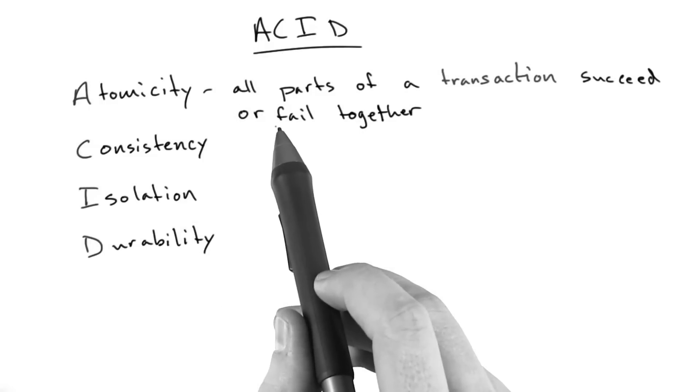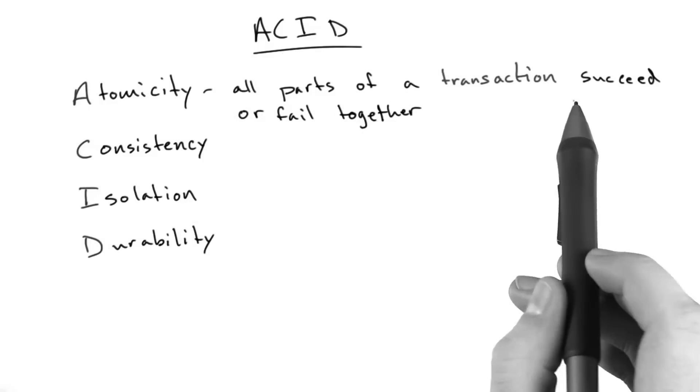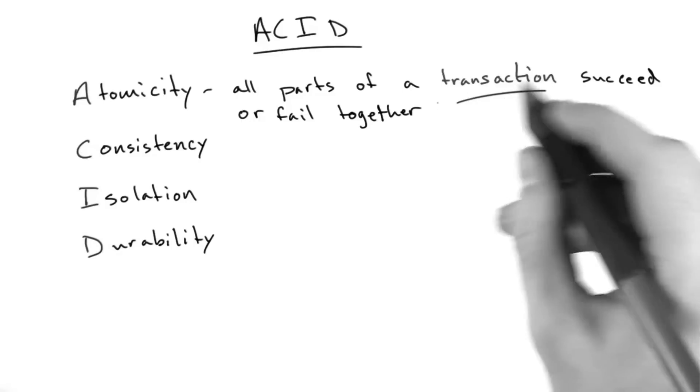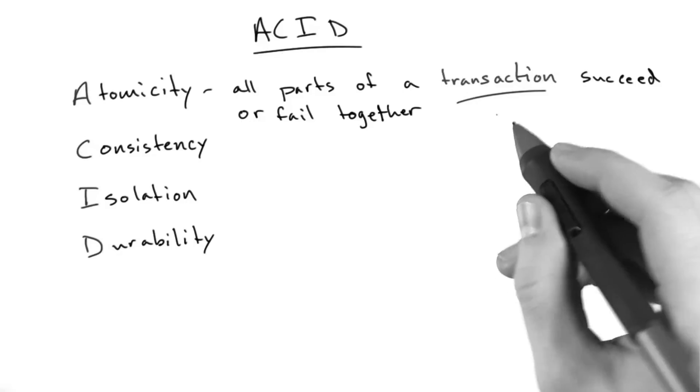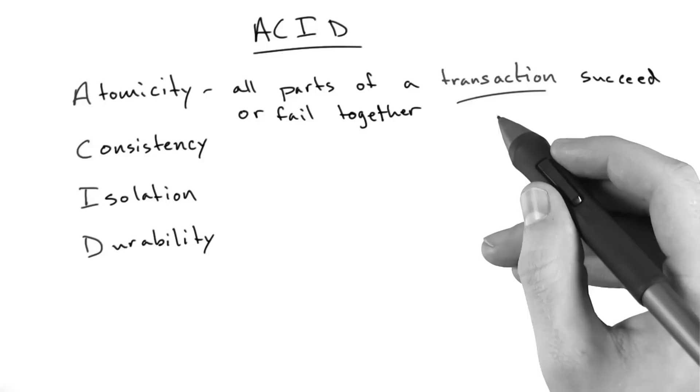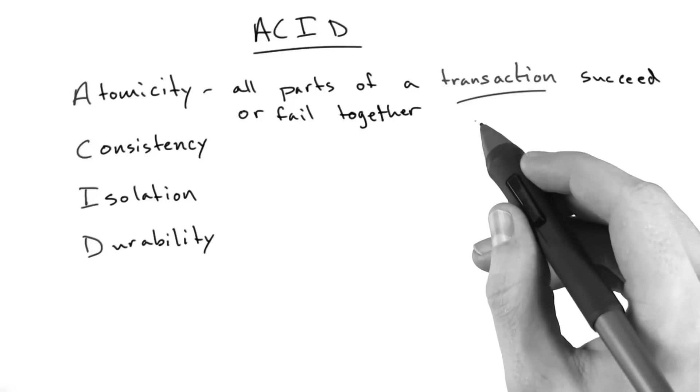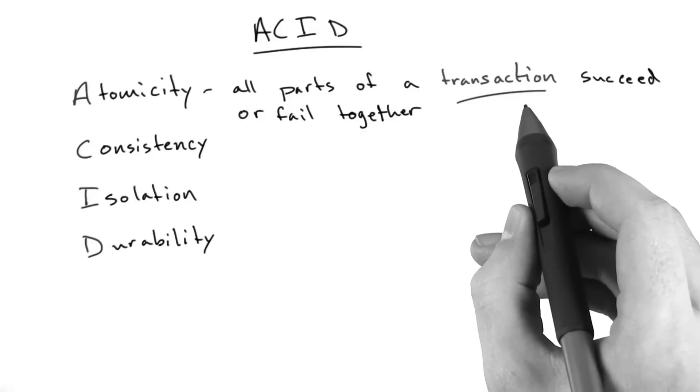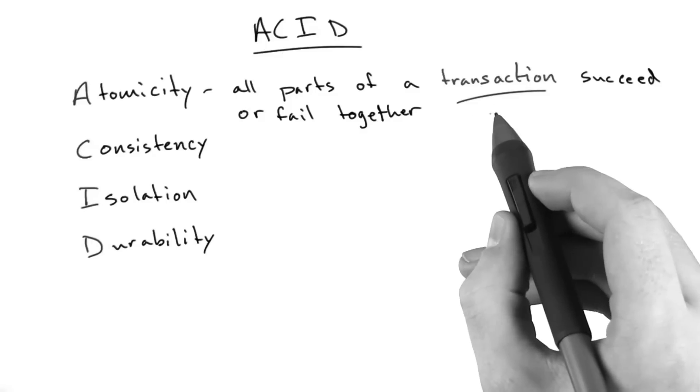Atomicity refers to the notion that all parts of a transaction succeed or fail together. Now, we haven't talked about transactions, but these are basically just a group of statements. So if we were updating our database, which is actually not something we spent much time on, there may be the case where we're updating two tables at once or updating multiple rows in our database together in one cohesive unit.